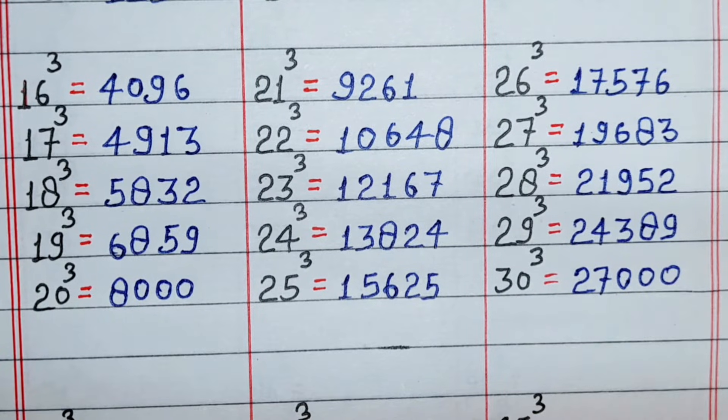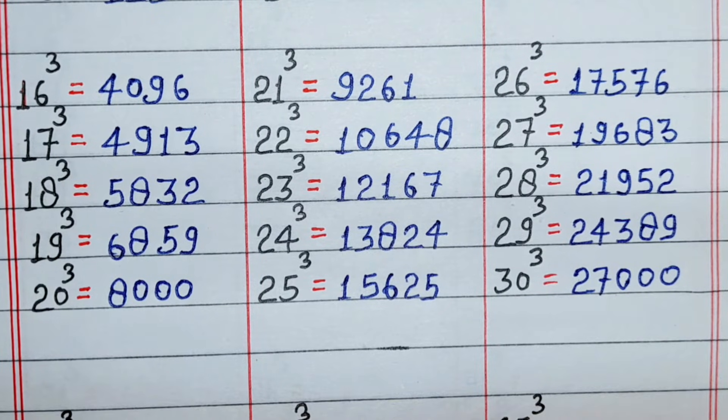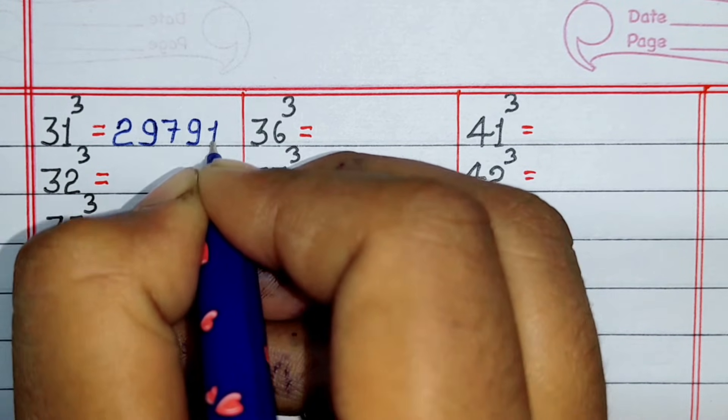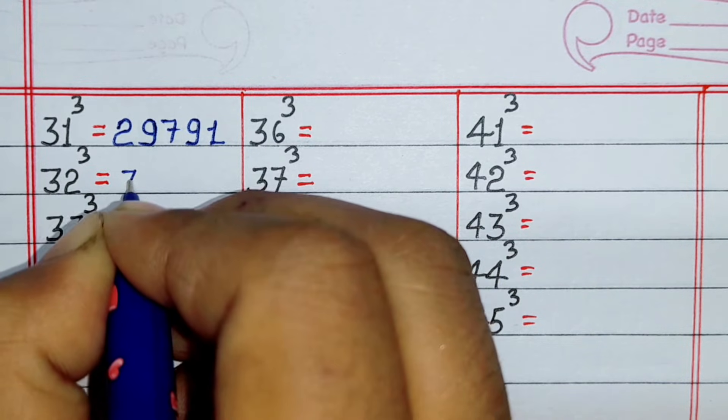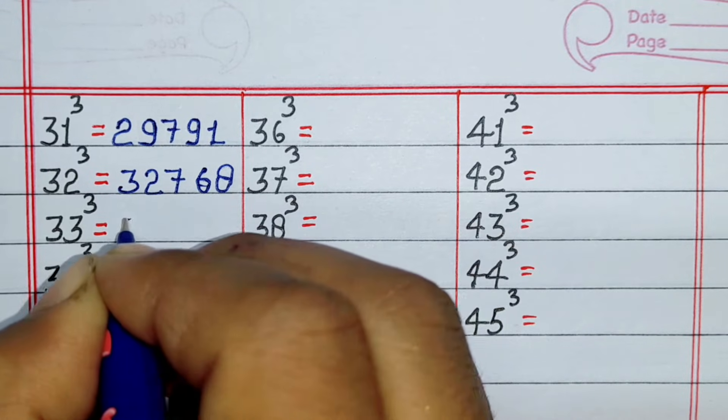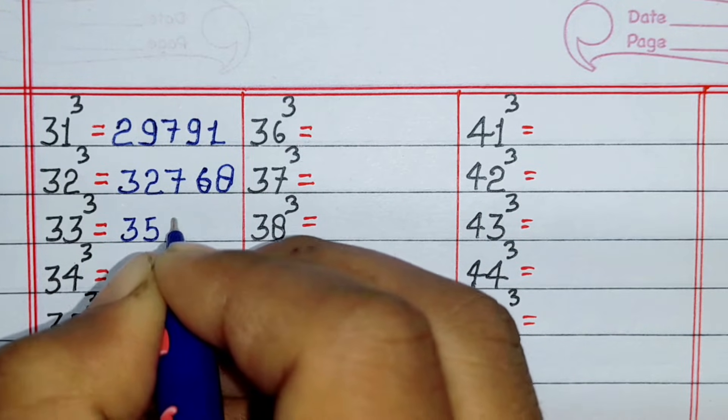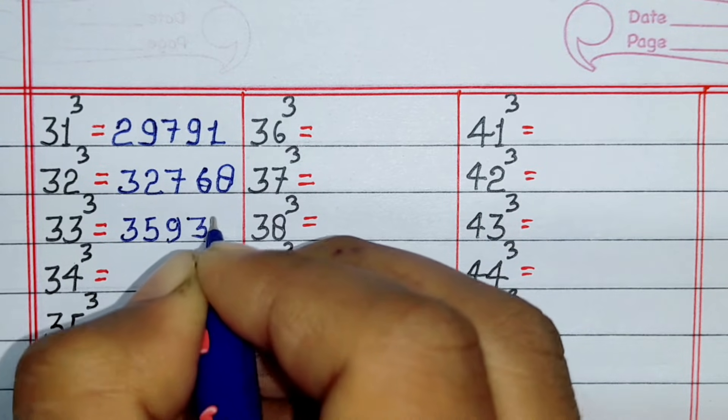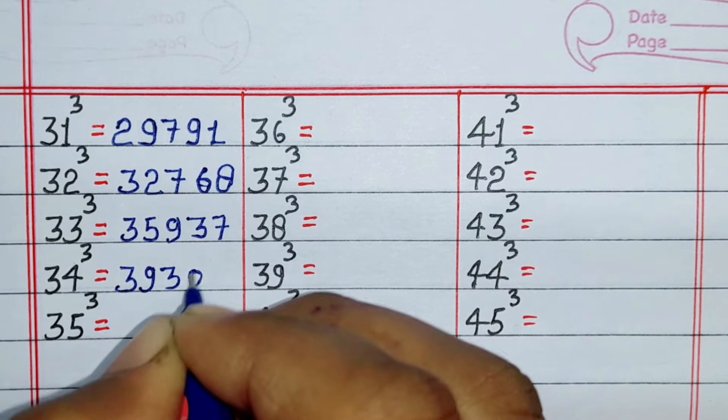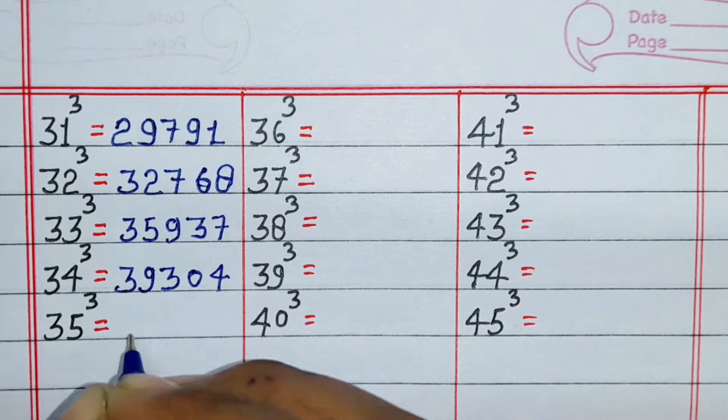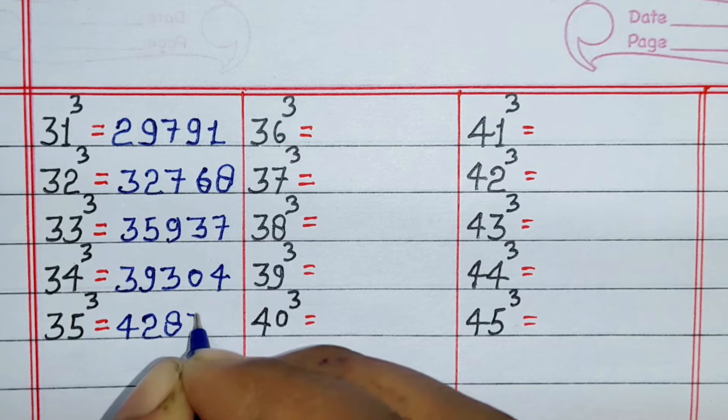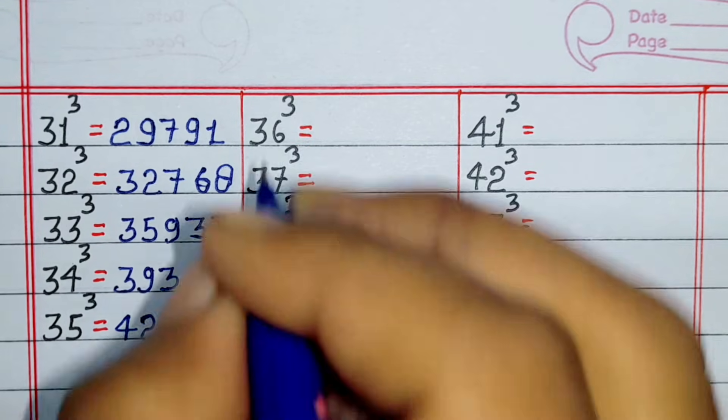Cube of 31 is 29791, cube of 32 is 32768, cube of 33 is 35937, cube of 34 is 39304, cube of 35 is 42875.